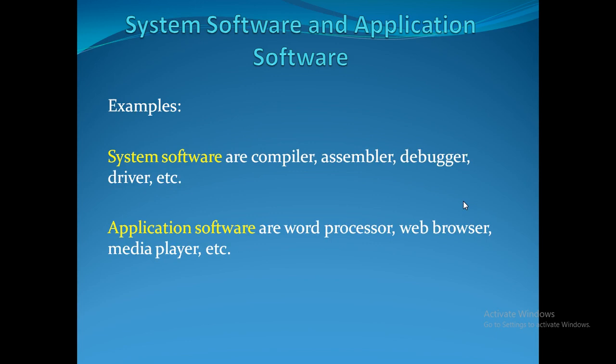Examples of system softwares are compilers, assemblers, debuggers, and drivers. Examples of application softwares are word processors, web browsers, and media players.